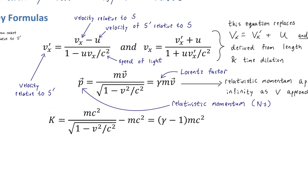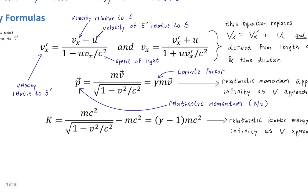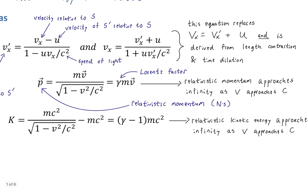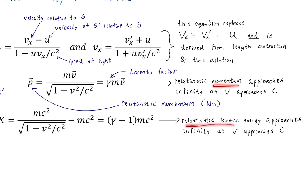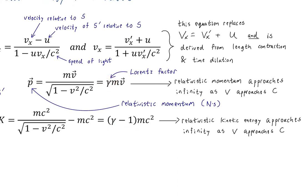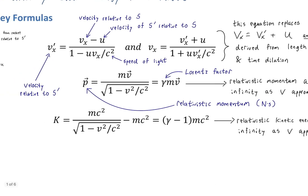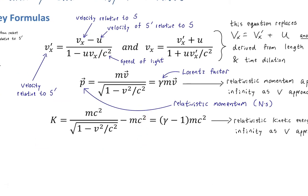That's a good segue to energy. Here is relativistic kinetic energy. Just like momentum, relativistic kinetic energy approaches infinity as V approaches C. It doesn't approach quite at the same rate — with momentum there's just gamma, but with relativistic kinetic energy it's gamma minus 1. Where does this equation come from? It comes directly from algebraic expressions derived from length contraction, though rather complicated algebra.